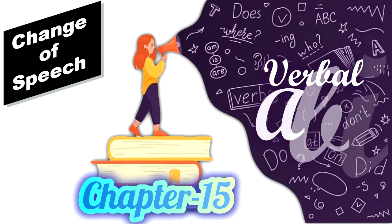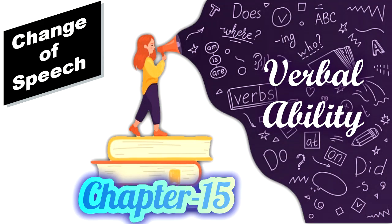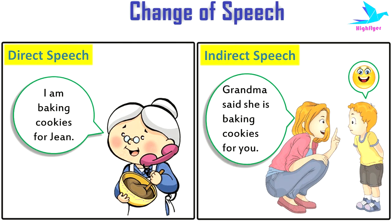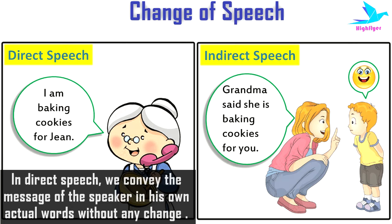Our next chapter for verbal ability is change of speech. There are two types of speech: direct and indirect speech. In direct speech, we convey the message of the speaker in his own actual words, without any change, to another person.